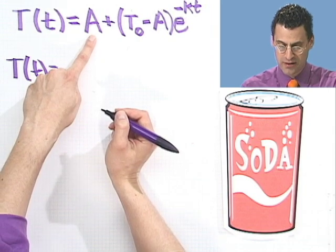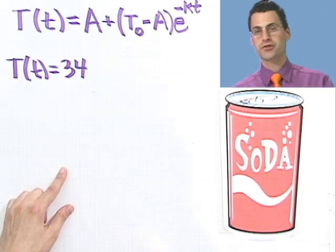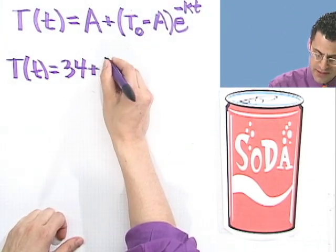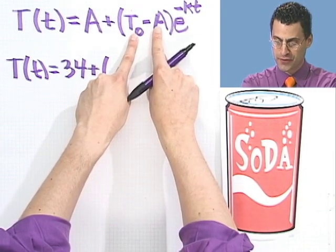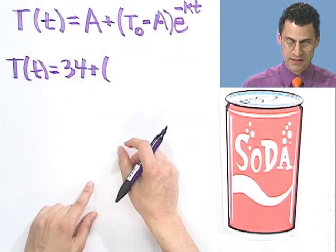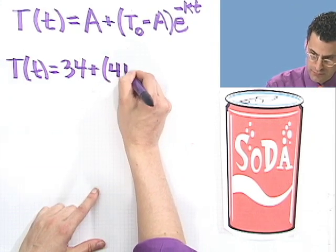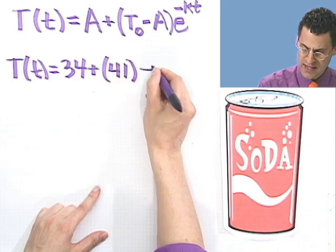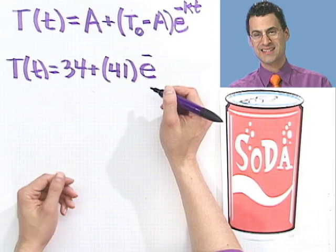And I would see what? Well, this number here I said was 34 degrees. Actually, I'm not going to put the little degree symbol there, but of course, these are degrees. Plus, and then I have 75, and I subtract off 34. So that's going to be 75 minus 34 is 41. So I have 41. And then I have e to the minus, but wait a minute. I don't know what the constant is.